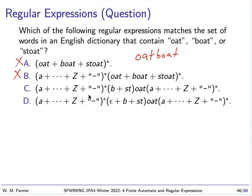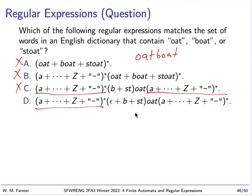The third option is closer: it says it's all strings that start with any string, end with any string, and have 'boat' or 'stoat' somewhere in the middle. But notice there is no possibility of the string 'oat', so this is wrong. Option D is correct: the beginning can be any string, the ending can be any string, and the middle will be empty, B, or ST — that is, the empty string, 'b', or 'st' — followed by 'oat'. So D is correct.